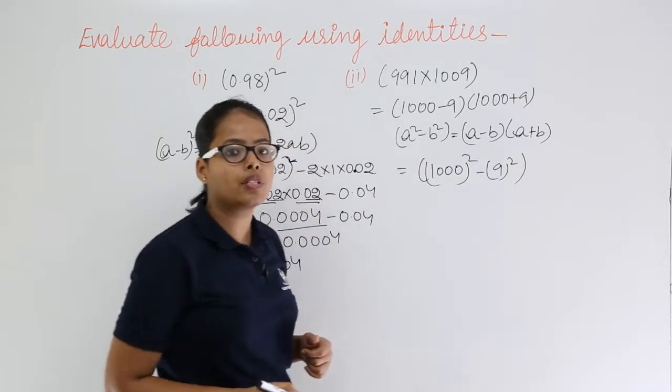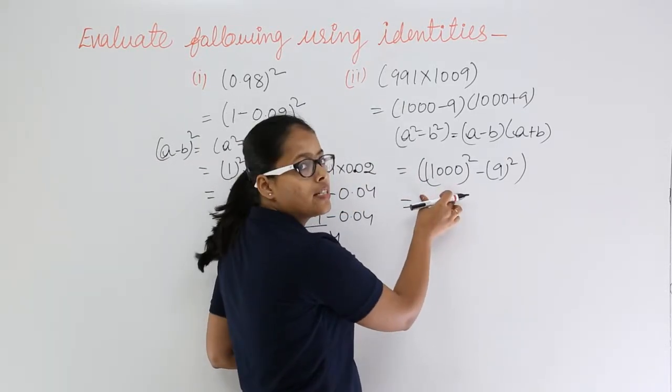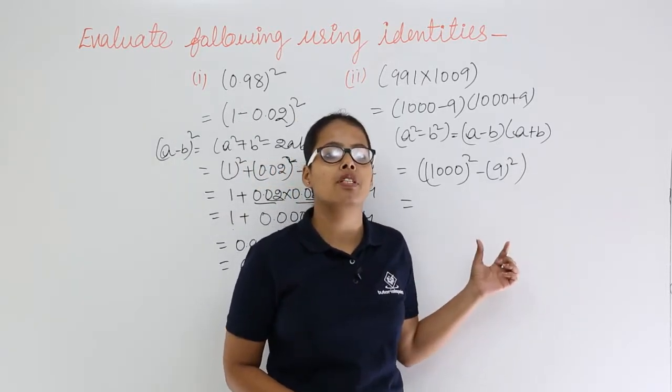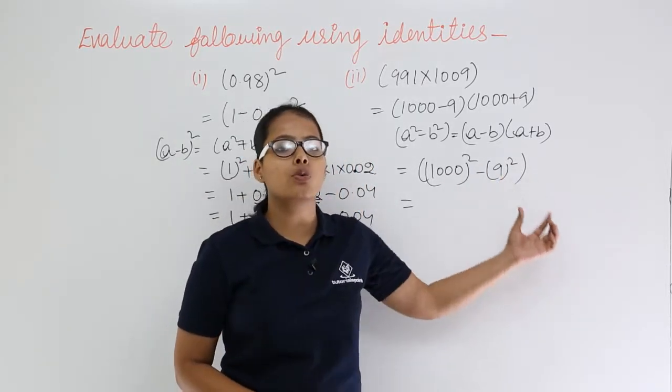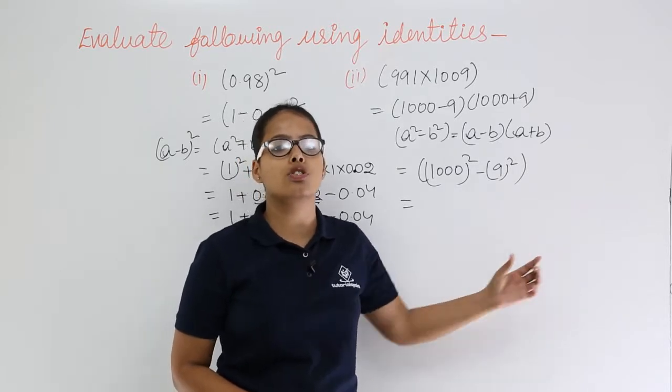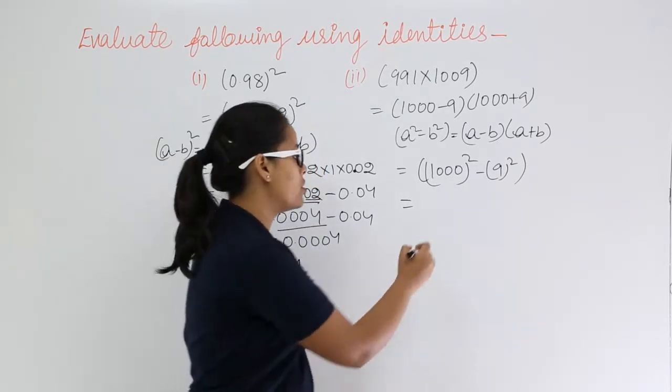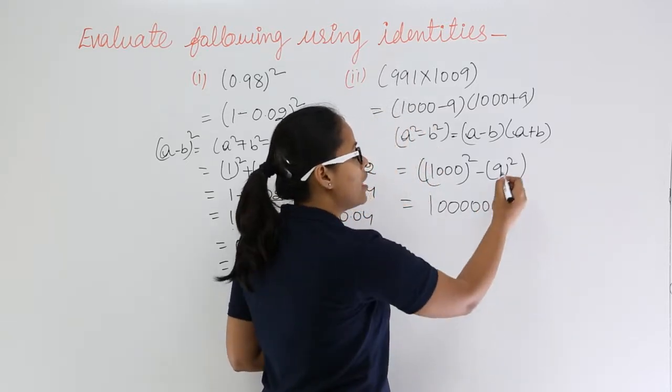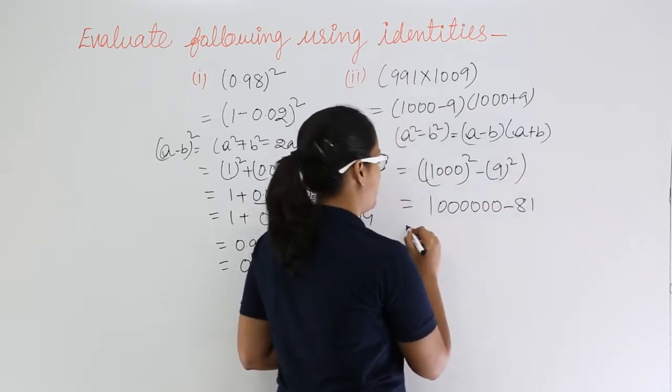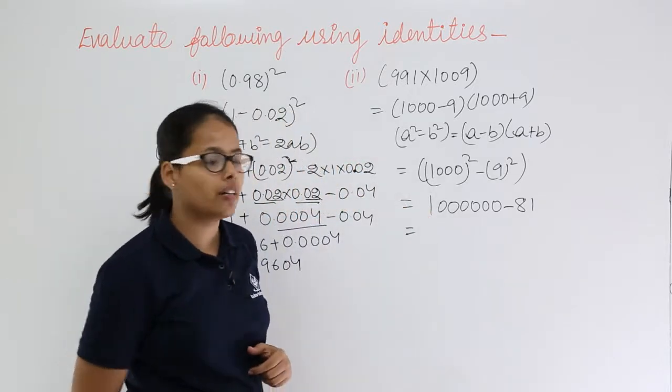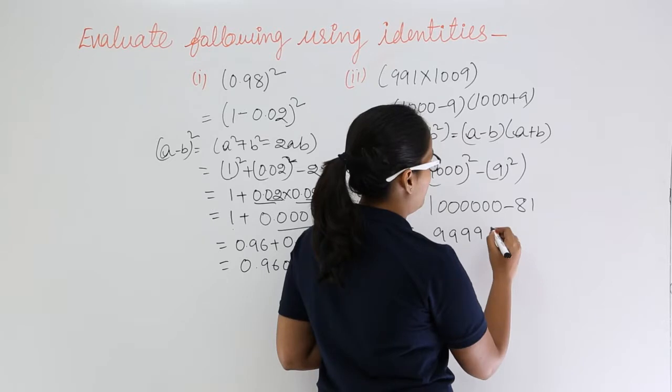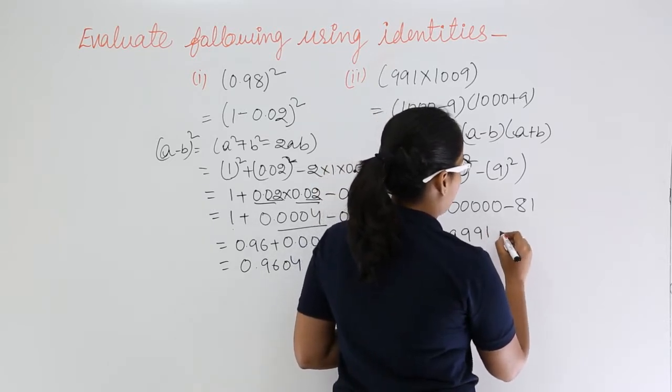This will give you this. Now when you are taking square of 1000 which means you are multiplying 1000 two times, and when you multiply 1000 two times means 1000 into 1000, so there is going to be 6 zeros. After 1 there are going to be 6 zeros. 9 square will give you 81. After subtraction 999919.